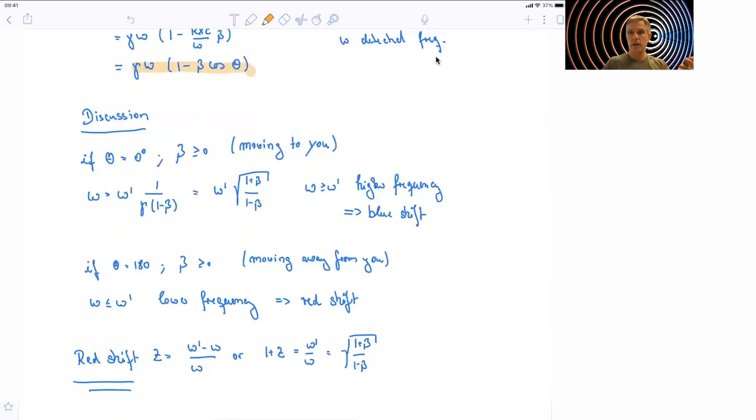So if you have a situation that a star is moving towards us and emitting light, the light is detected by us, maybe by our eyes or by a telescope, that light is going to be blue shifted. It's going to go to higher frequencies.